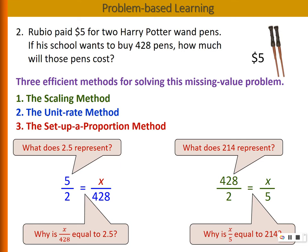We scale 2 pens by 214 to 428 pens. So likewise, we need to scale the $5 by 214 to get the cost we need. So this second proportion is related to the scaling method.